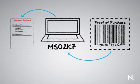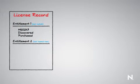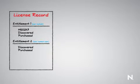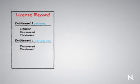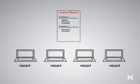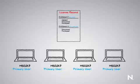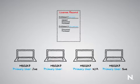In ZENworks Asset Management 10.3, I also have a per-named user option. This might be an MSDN entitlement, where basically as long as Bob is using it, Bob can put it on as many machines as he wants. You'll notice that when I'm running my inventory scan, one of the things I pick up is primary user. So one of these has Joe, one has Sue, one doesn't have a primary user, and one has Bob.